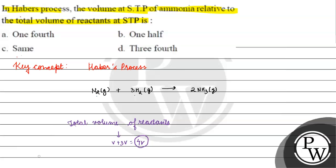Agar baat kertay hain total volume of ammonia ki, total volume of ammonia will be 2V by 4V, which is one by two, one-half.